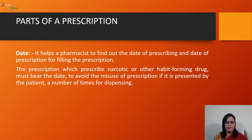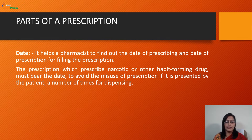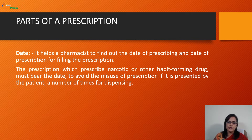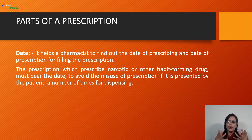The very first part is the date. It helps the pharmacist to find out the date of prescribing. If it is written with a particular date, the pharmacist will know when the prescription was written. Prescriptions that prescribe narcotic or other habit-forming drugs must particularly bear the date.